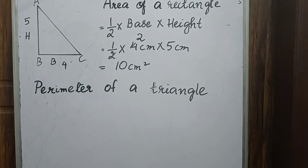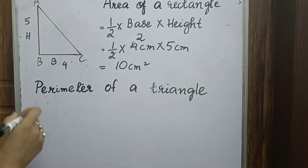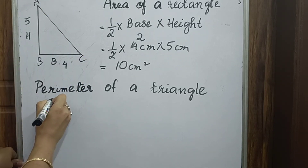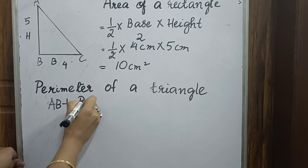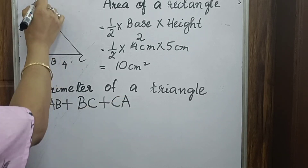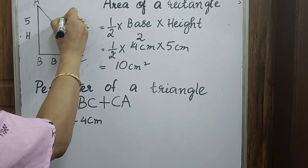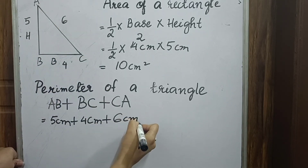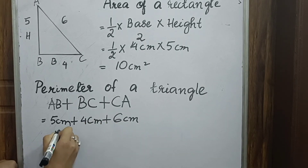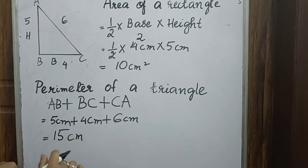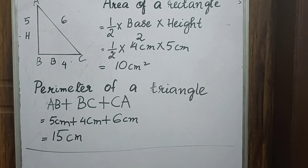Now we will find out the perimeter of triangle ABC. The perimeter of triangle ABC is AB plus BC plus CA, which is the sum of all three sides. If AB is 5 cm, BC is 4 cm, and CA is 6 cm, then the perimeter is 15 cm. In the case of area we multiply centimeter into centimeter giving cm², but for perimeter we just write the sum of all sides in centimeters.